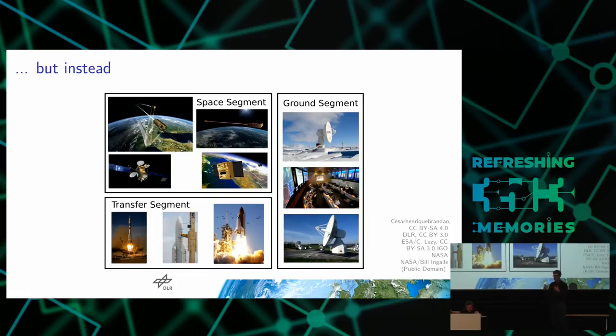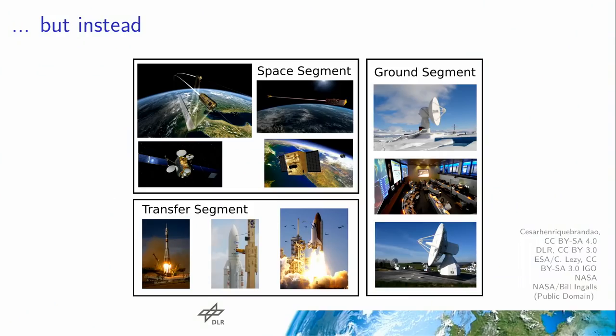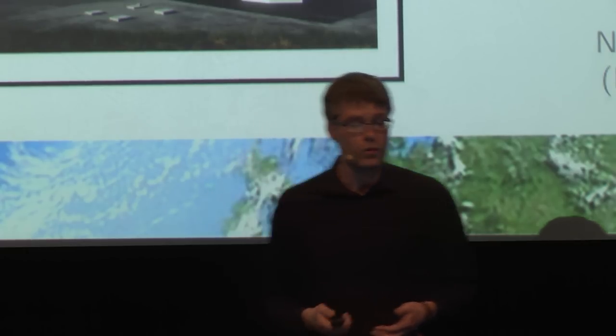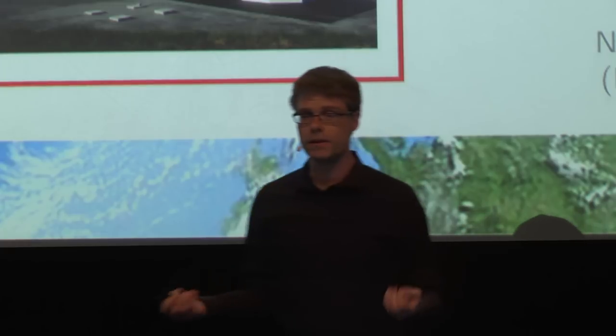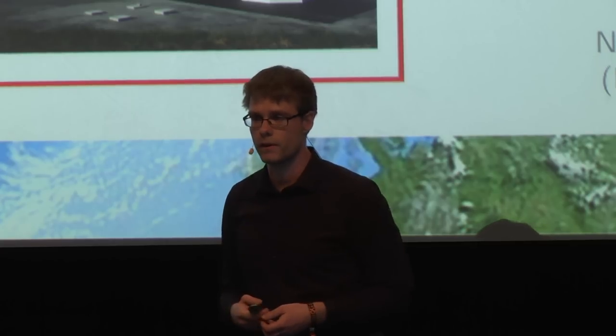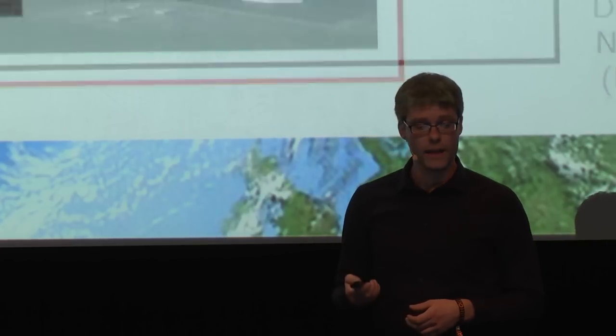Stattdessen reden wir über eins der Hauptsegmente von Mission Operations. Insgesamt hat man drei Teile: Das Weltraumsegment – das ist alles, was tatsächlich in den Weltraum fliegt: Satelliten, Raumfahrzeuge und ihre Nutzlasten. Dann ist das Transfersegment, das ist das mit dem Starten. Und dann ist das Bodensegment. Wir werden hauptsächlich über das Bodensegment sprechen – das ist das, was auf der Erde passiert, damit Raumfahrzeuge im Weltraum befehligt oder benutzt werden können.